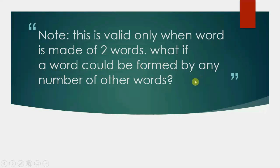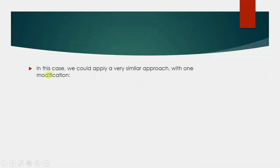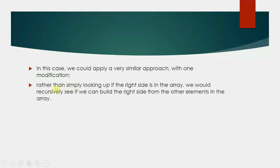What if a word could be formed by any number of other words? In this case we apply a very similar approach with one modification: rather than simply looking up if the right side is in the array, we would recursively check if we can build the right side from the other elements in the array. Code for this is given on our website.